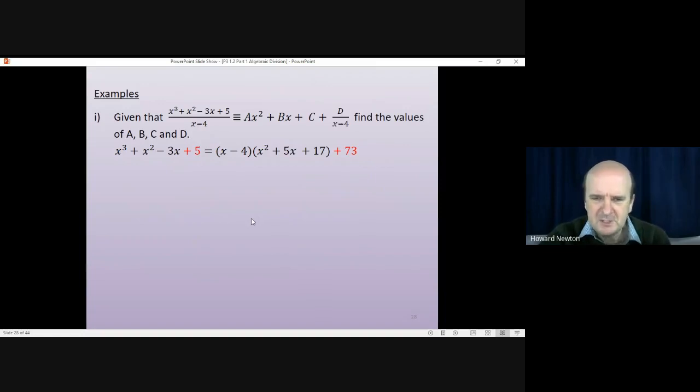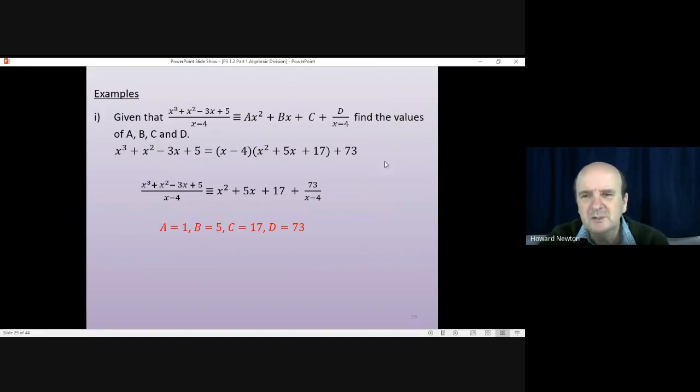That would be the first way that you can write down the answer. The second way of writing down the answer would be that. The third way of writing down the answer is actually to write down what they asked us to do. If you go back to the question, they said find the values of a, b, c, and d, these coefficients. Well, a is 1, b is 5, c is 17, and d is 73.